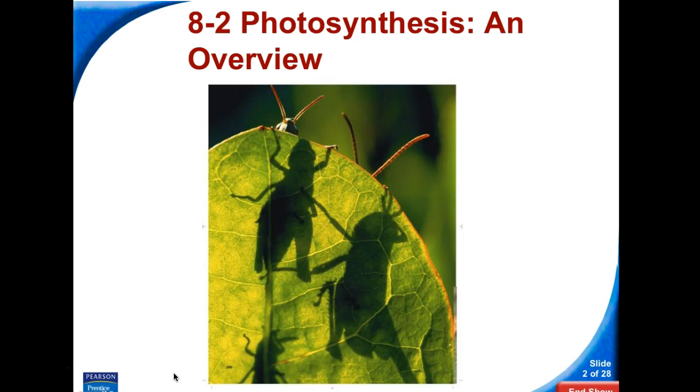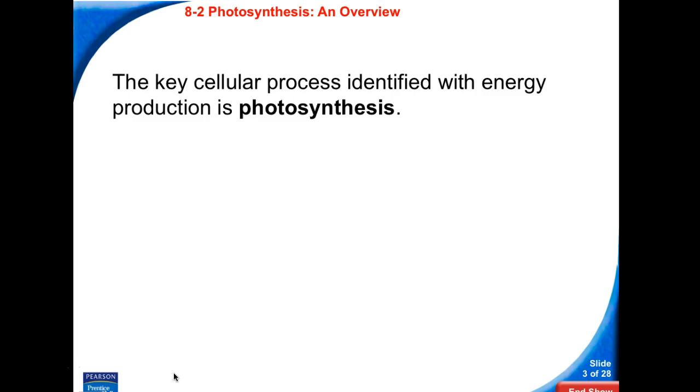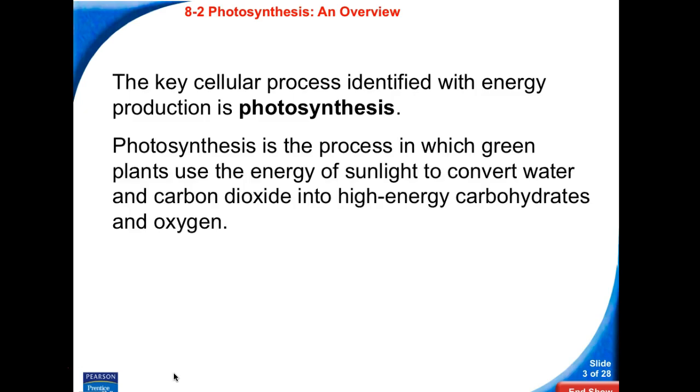Section 8.2 Photosynthesis: An Overview. The key cellular process identified with energy production is photosynthesis. Photosynthesis is the process in which green plants use the energy of sunlight to convert water, H2O, and carbon dioxide, CO2, into high energy carbohydrates and oxygen gas.